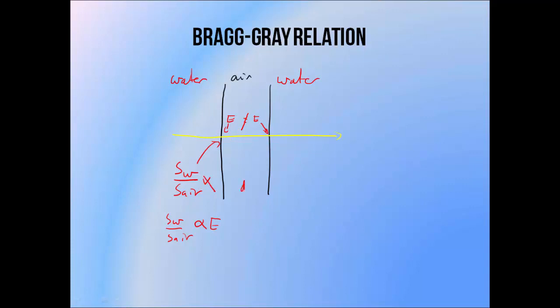Energy loss within the air volume depends on the distance travelled through the air volume — the bigger the distance, the greater the energy drop. But if we keep this distance very small relative to the range of the electrons, then any change of energy is very small as well, so we can assume that it's negligible. So one of the key Bragg-Gray conditions is that the chamber volume needs to be small relative to the range of secondary electrons produced by the beam we're using.